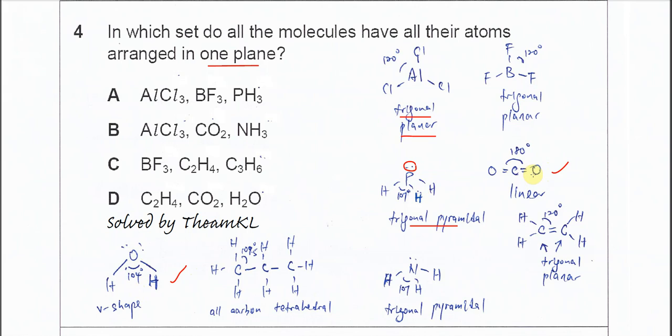For ammonia (NH₃), ammonia is similar to PH₃, so its geometry is also trigonal pyramidal. This means the nitrogen and hydrogen cannot be in one plane.